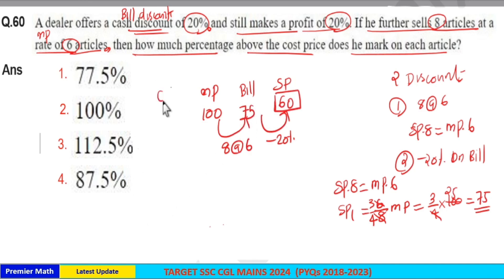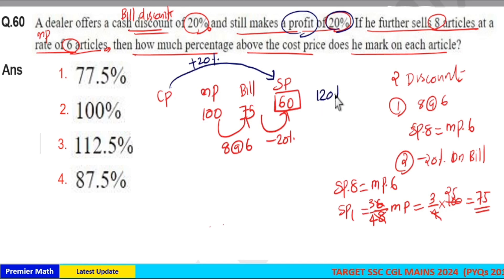Now you can find the cost price of the article. Here he still makes a profit of 20% even after these two discounts. So profit is 20% means if cost price is 100%, selling price should be 120%. So 120% of cost price is the selling price 60 rupees. Now 60 goes 2 times in 120, so that's 1 by 50. So CP is equal to 50. Cost price is 50 rupees.